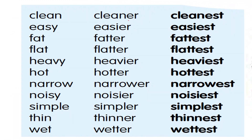Here are more examples: clean, cleaner, cleanest. Easy, easier, easiest. Fat, fatter, fattest. Flat, flatter, flattest. Heavy, heavier, heaviest. Hot, hotter, hottest. Narrow, narrower, narrowest. Noisy, noisier, noisiest. Simple, simpler, simplest. Thin, thinner, thinnest. Wet, wetter, wettest. These are some forms of the positive, comparative and superlative adjectives.